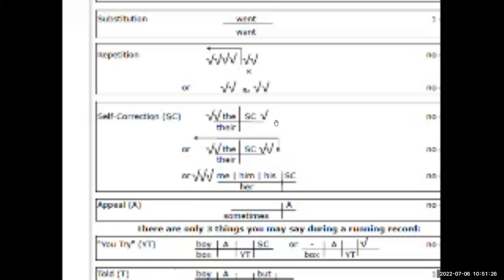Sometimes we mark lots of things as self-corrections when the student is really just still trying to figure out the word. Like in this example: they're reading along, check, check, check, and then the word is 'her' but first they say 'me,' then 'him,' then 'his.' If they finally said 'her,' I would just put a check mark — not call that a self-correction because they're still trying to figure out the word. If they said 'his' and were getting ready to go on, then went back, that I could agree with as a self-correction. Also, whenever you mark a self-correction, it's something you have to analyze for the cueing system, so you put extra work on yourself that you don't really need to.